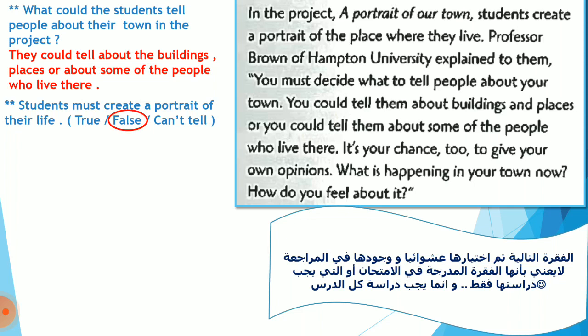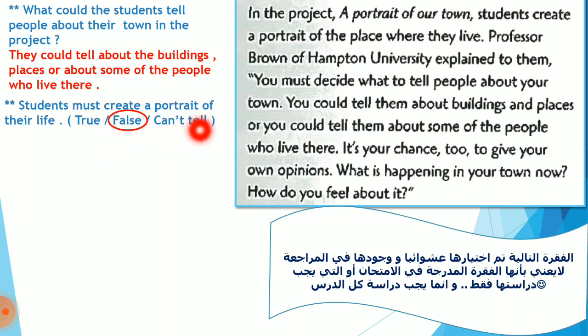This sentence is false because we are not making a project about our own life, but rather we want to make a project about the place where we live. The answer options will be: true if the sentence is correct, false if the sentence is wrong, and 'I can't tell' if that information is not mentioned at all in the text — meaning it was neither stated correctly nor incorrectly; it simply wasn't mentioned.